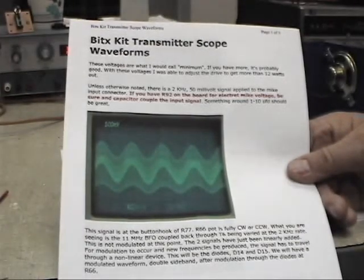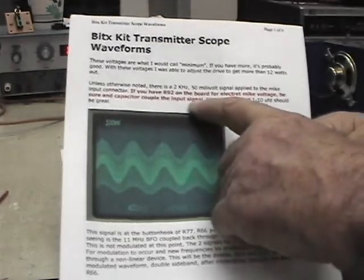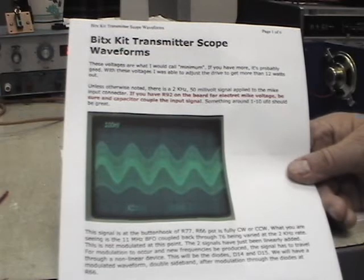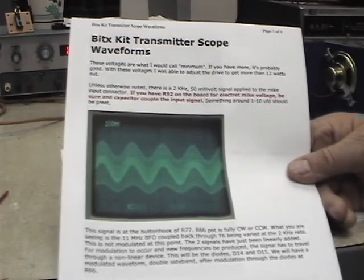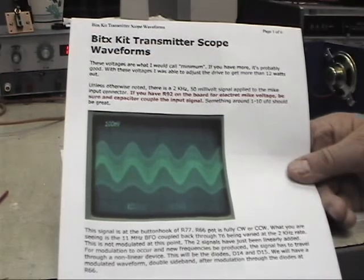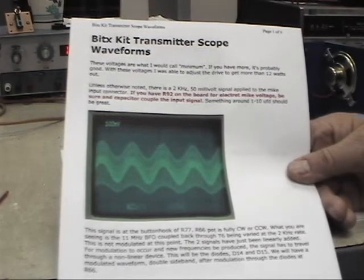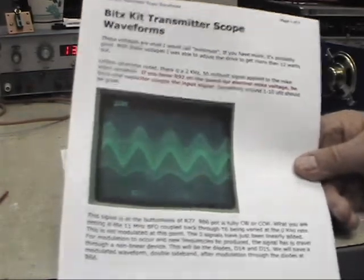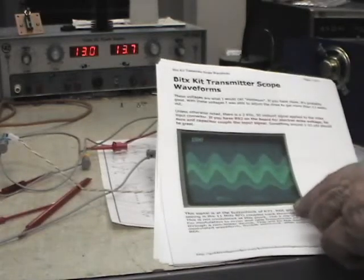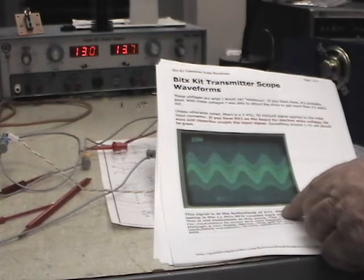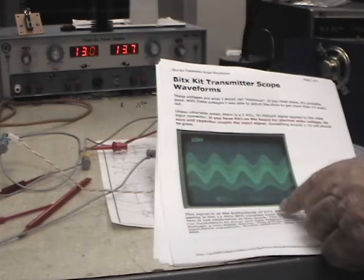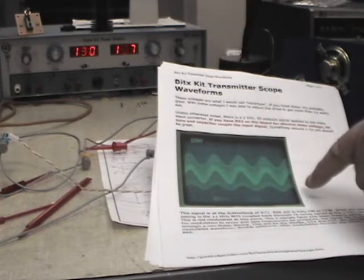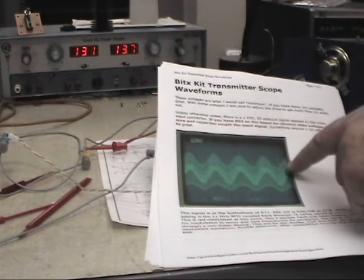And you'll be able to see and make sure that all those are working. So it's got waveforms and amplitudes there. What it calls for is 2 kHz 50 mV signal input into the mic jack. So we'll go ahead and hook up to do that. The first thing you need to make sure, and it's headlined here in red, if you have R92 on the board for the Electret mic, you have to capacitively couple in the audio signal into the mic from the signal generator. If you don't, you won't get any output.